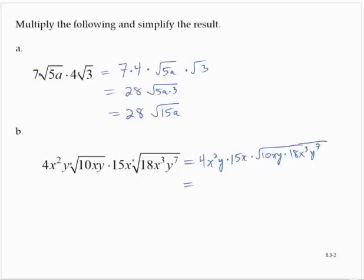So we'd have 4 times 15, that's 60x cubed y, and on the inside, I'd have 180x to the 4th, y to the 8th. Now 180 is 36 times 5.